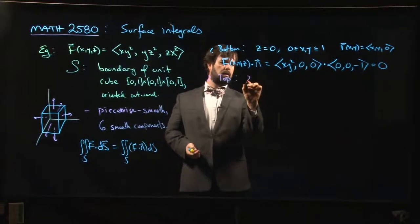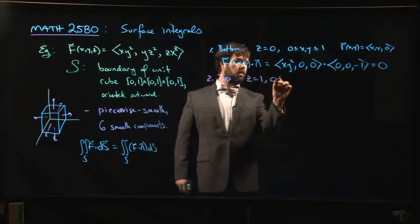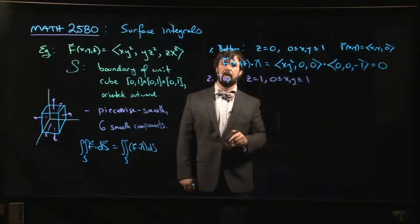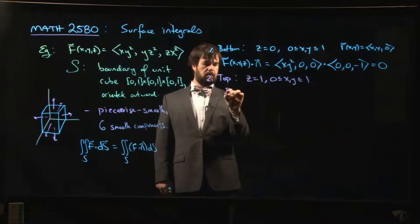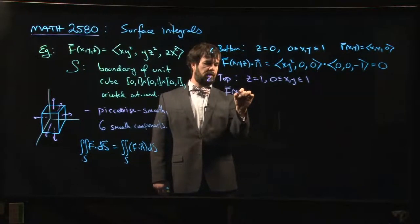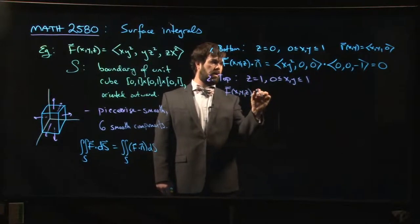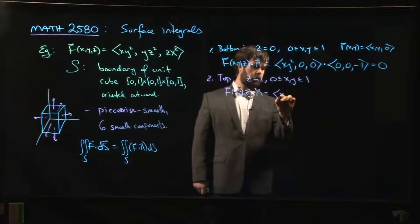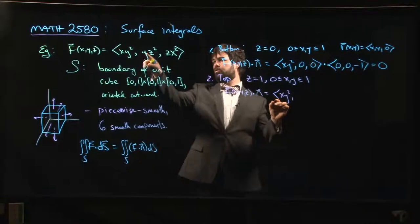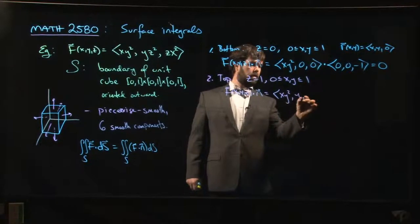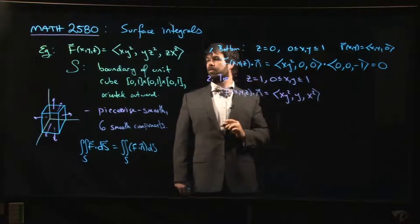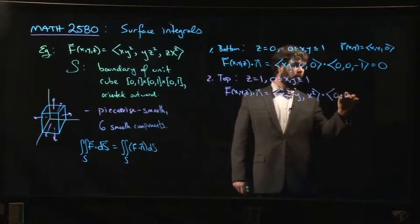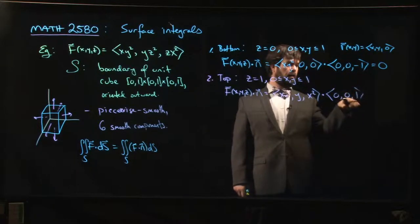Next we can do the top. On the top, z equals one, x and y run from zero to one. So our f of (x,y,z) dot n is going to be (x, y², y) and then (x, y, x²), setting z equal to one, dotted with the upward pointing normal vector on top. We point down on the bottom, we point up on the top.